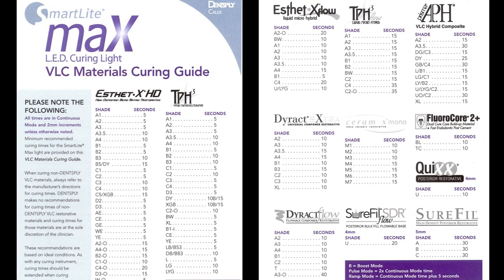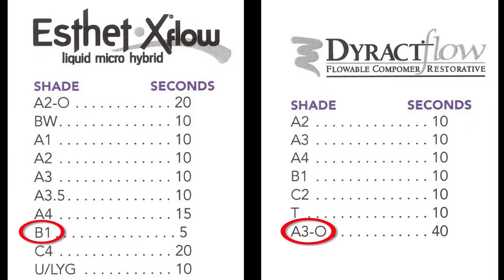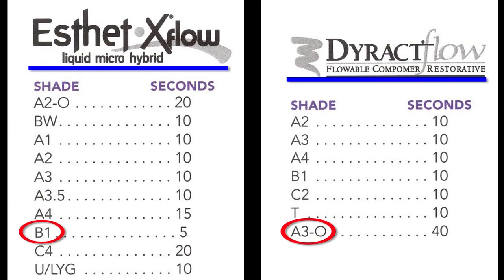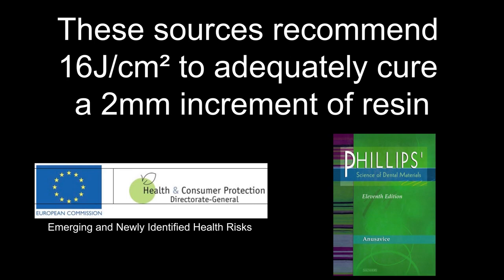Instructions for the SmartLight Max curing light recommend use between 5 and 40 seconds depending on the shade and type of resin. According to DentSupply, this light delivers 1200 mW per centimeter squared, meaning dentists must deliver between 6 and 48 joules per centimeter squared depending on the resin. Alternative sources such as the Philips textbook and the European Commission on emerging and newly identified health risks both recommend delivering 16 joules per centimeter squared to adequately cure a 2 mm increment of resin.